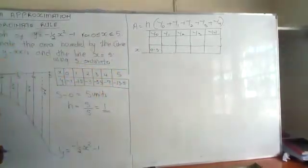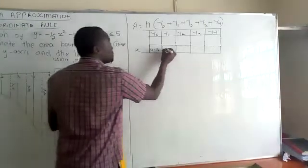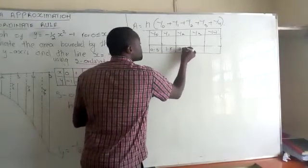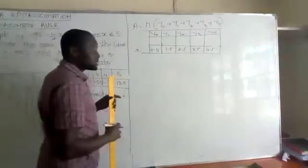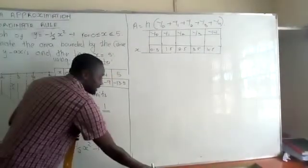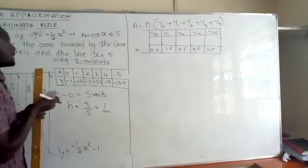The second one will be when x is 1.5. So this will be 1.5, at 2.5, at 3.5 and finally at 4.5. On calculating this, these are values I've already calculated.